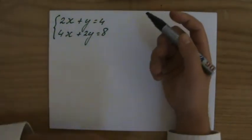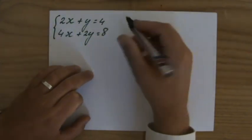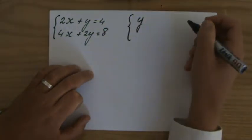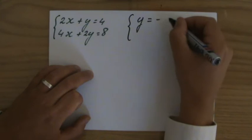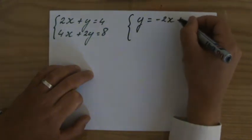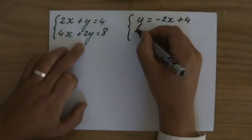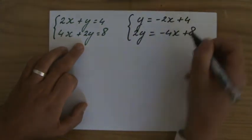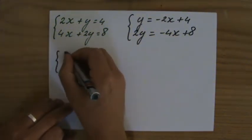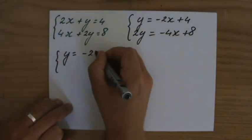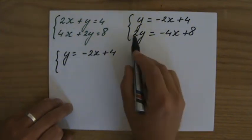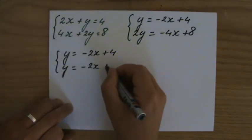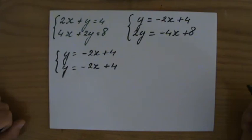I have to graph them but I want to write my two equations in gradient intercept form first, so I'm going to rearrange them. I'm going to take away 2x for the first one on both sides, so that's going to be y equals minus 2x plus 4. For the second one, I'm going to take away 4x on both sides, then divide both sides by 2 to get y equals minus 2x plus 4.